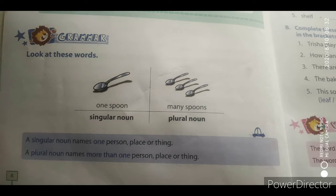Look at these words. One spoon and many spoons. Today we learn singular noun and plural noun. Here you can see: singular noun — one spoon; plural noun — many spoons. मतलब आपको समझ में आ रहा है कि singular noun का मतलब होता है एक ही चीज़ और plural noun का मतलब होता है बहुत सारी चीज़ें.